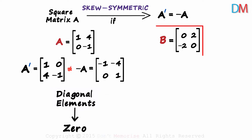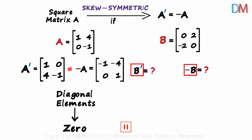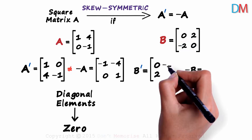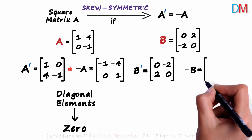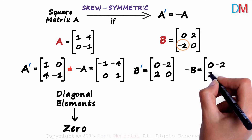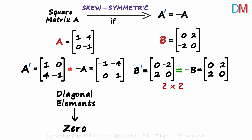Look at matrix B. Is it skew symmetric? It is a square matrix and its leading diagonal elements are zero, so it may be skew symmetric. Pause the video and try to find B transpose and negative B. B transpose: the first row becomes the first column — 0, 2 — and the second row becomes the second column — minus 2, 0. For minus B, negating each element gives 0, minus 2, 2, 0. These two matrices are equal, so B is a skew symmetric matrix.